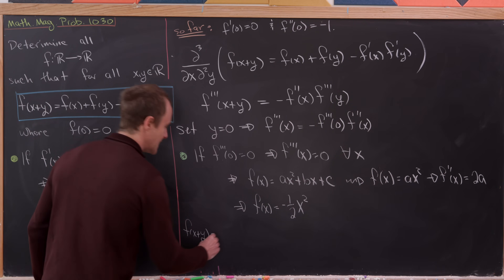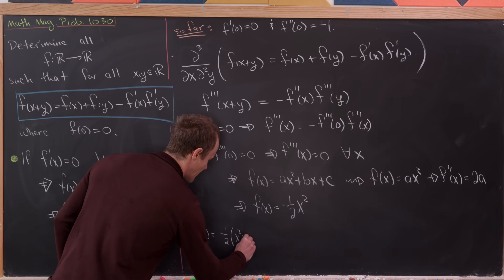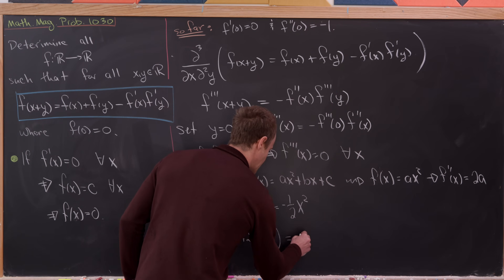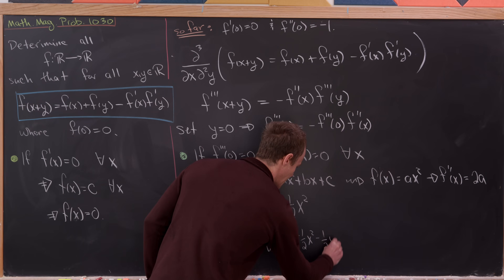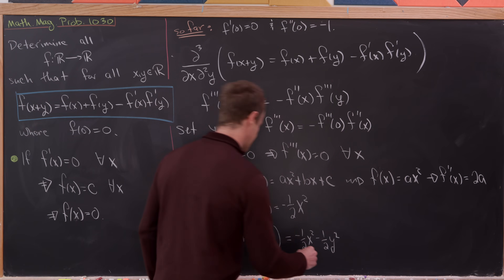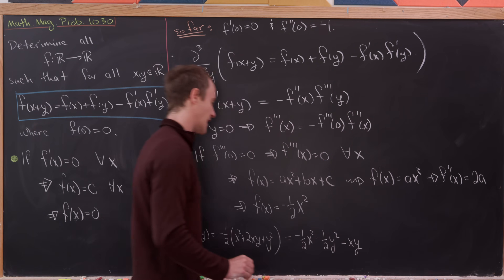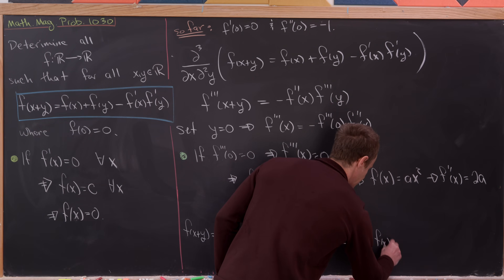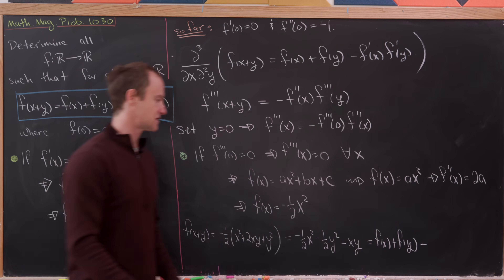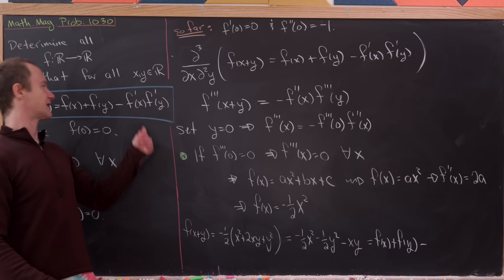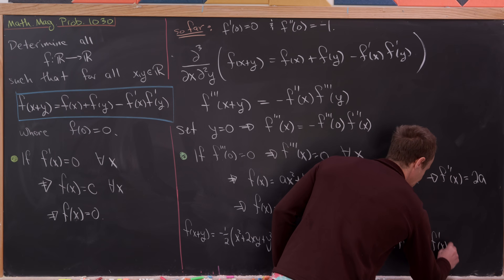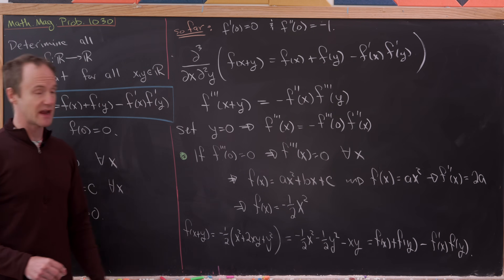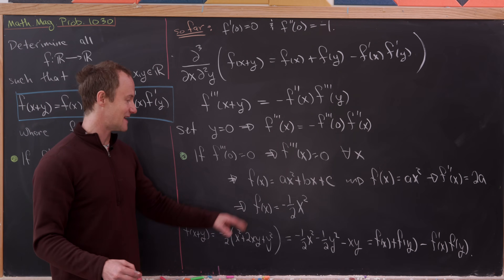Notice that f(x+y) = -½(x²+2xy+y²) = -½x² - ½y² - xy. The -½x² is f(x), the -½y² is f(y), and xy = f'(x)·f'(y) since f'(x) = -x. So this equals f(x)+f(y)-f'(x)·f'(y), exactly our functional equation. This function satisfies the original equation.